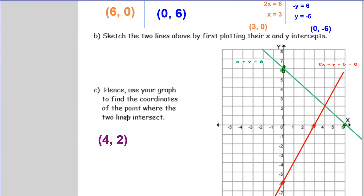Here's line one. Here's line two. What are the coordinates of this point right here where they intersect? What's its x-coordinate? That's right, it's four. What's its y-coordinate? That's right, it's two.